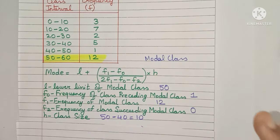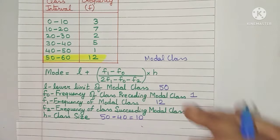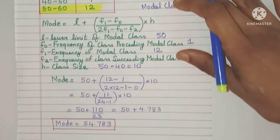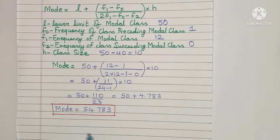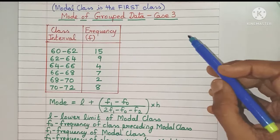Now just follow the same procedure, putting all the values into the formula. Doing the calculations, the mode value comes out as 54.783.